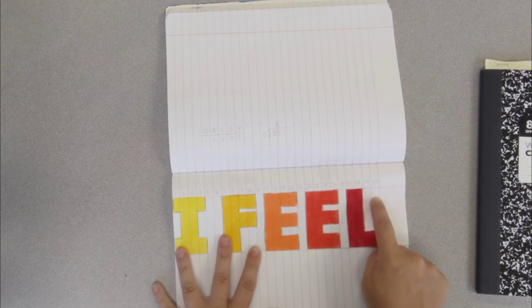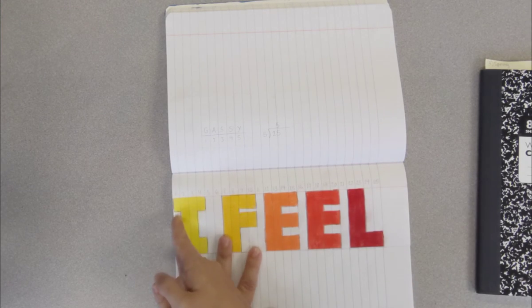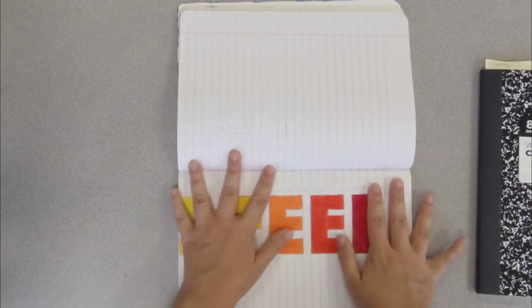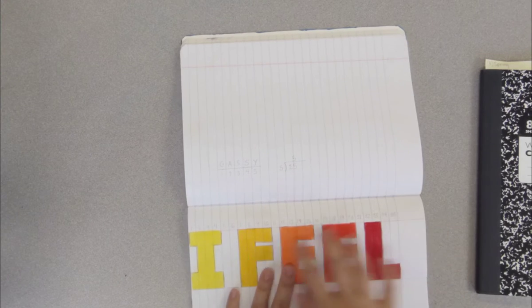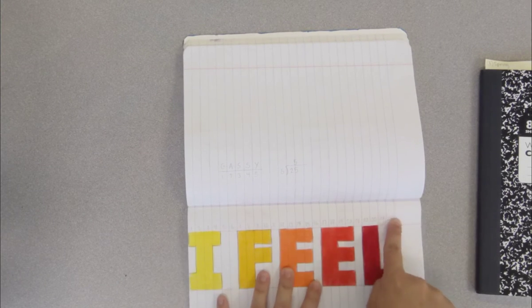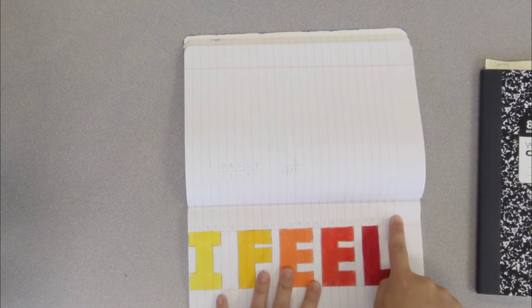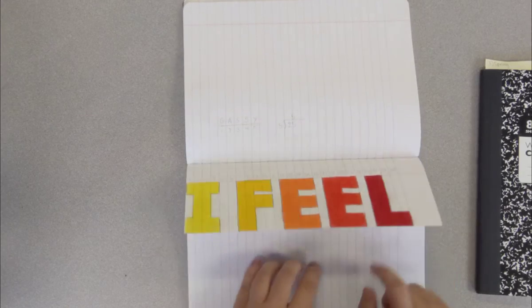So you're gonna turn your page sideways. Normally you'd be looking at it like this, turn it like this, and number from 1 to 25. I'm gonna show you on a new sheet.